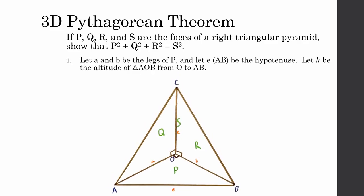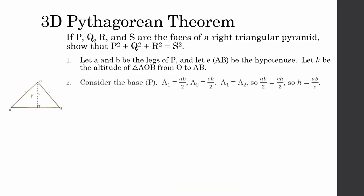Let A and B be the legs of face P, and let E be the hypotenuse of face P. Let H be the altitude of triangle AOB from O to AB. The area of face P can be calculated two ways: A1 equals AB over 2, and A2 equals EH over 2. Because these two areas are for the same triangle, we can solve for H in terms of A, B, and E, where H equals AB over E. Next, we will solve for E in terms of A and B: E is equal to the square root of A squared plus B squared by the Pythagorean theorem.